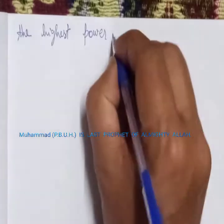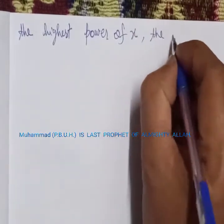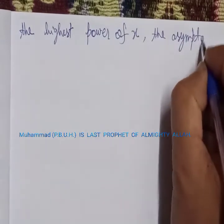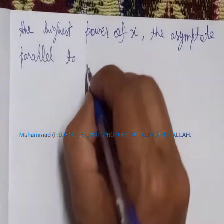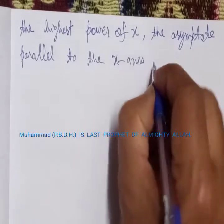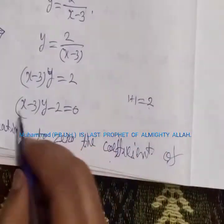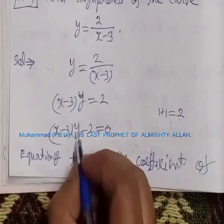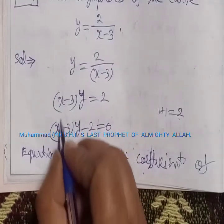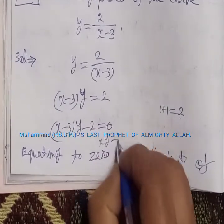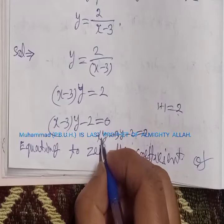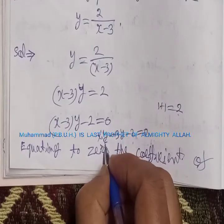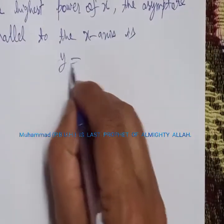For the asymptote parallel to the x-axis, we look at the equation x minus 3y minus 2 equals zero. The highest power of x is 1, and its coefficient is y. Equating the coefficient of the highest power of x to zero gives us y = 0.